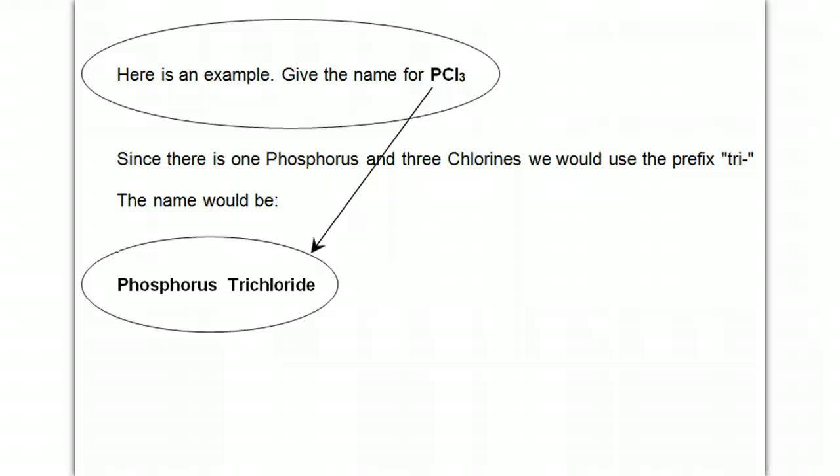Here's an example. If I give you the formula PCl3, and I want the name, all you need to notice is that there is one phosphorus, and there are three chlorines.